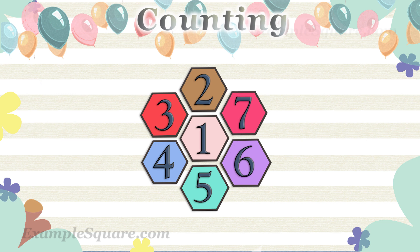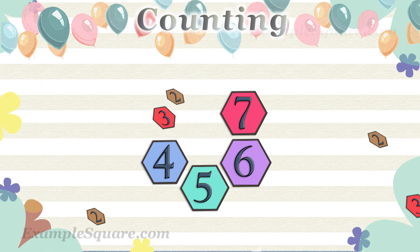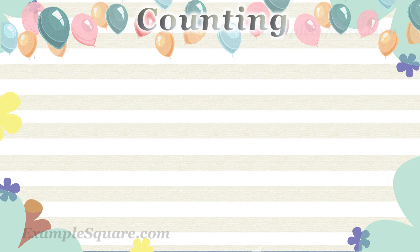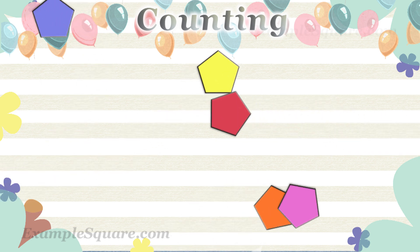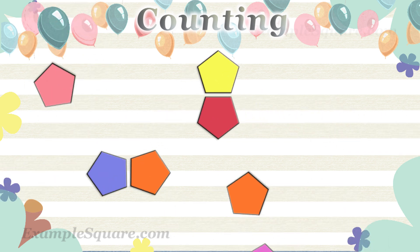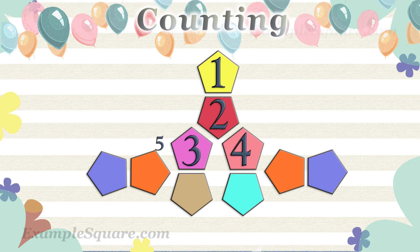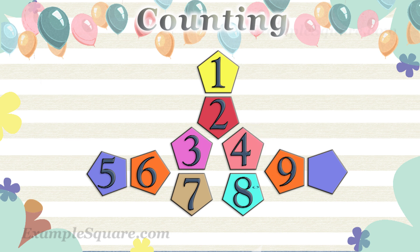How many pentagon shapes are there? One, two, three, four, five, six, seven, eight, nine, ten. There are ten pentagon shapes.